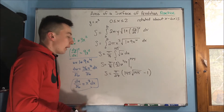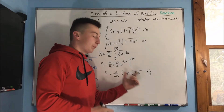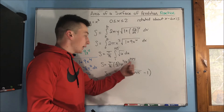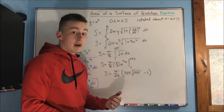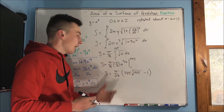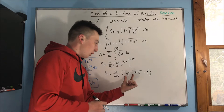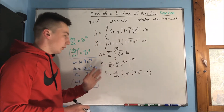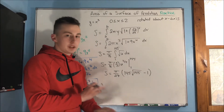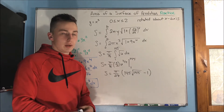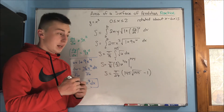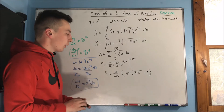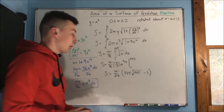Remember that u to the 3/2 of 145 is just that number times the radical of that number. It's much easier to just write it out quickly rather than trying to figure it out on a calculator. So anyway, that's your answer for the first problem.